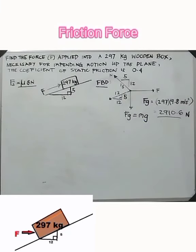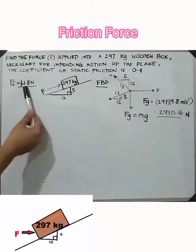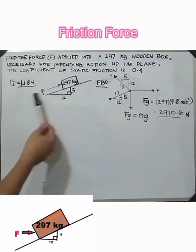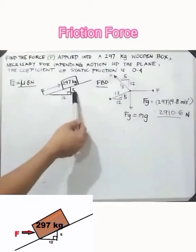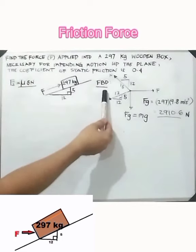Find the force F applied to a 297 kg wooden box necessary for impending motion on the plane. The coefficient of static friction is 0.4. From the formula, the force of static friction equals mu_s times N.